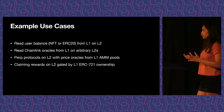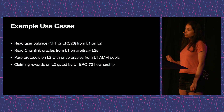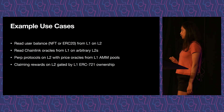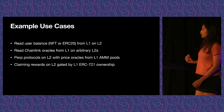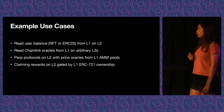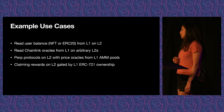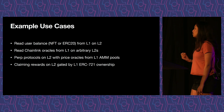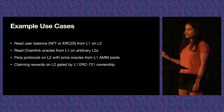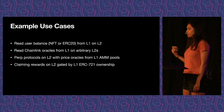Another use case: Chainlink oracles generally post to L1, but Chainlink isn't deployed everywhere on all L2s where people want to deploy DeFi protocols. So users wanted to read the Chainlink oracle from L1 while running a DeFi protocol on L2 — that's another good use for state queries. Similarly, if you have a protocol on L2 but it's dealing with assets trading on an L1 AMM or AMMs on multiple chains, that's another great reason to read information from other chains.